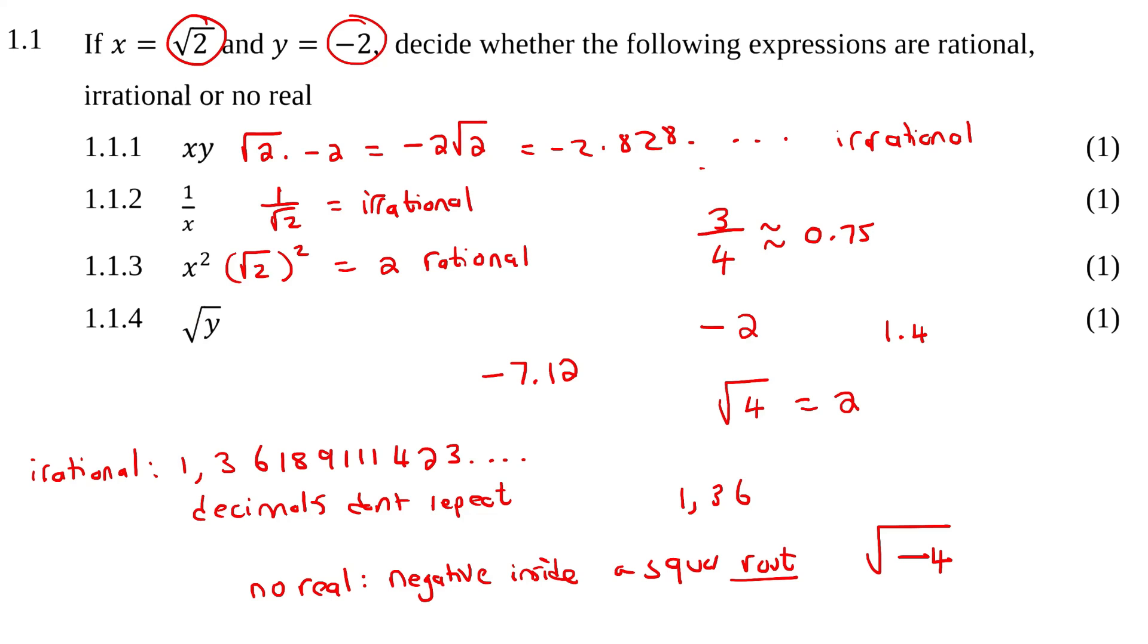And then square root of y. So, the square root of negative 2, that is going to be no real, non-real, because that is a negative inside a square root. And so, they meant to say non-real, but just to be safe, I'm going to copy whatever they say, so it's no real. I checked on the memo. On the memo, it says non-real. So, maybe they just mistyped it over there. Should be the word non, and then a gap, and then real.